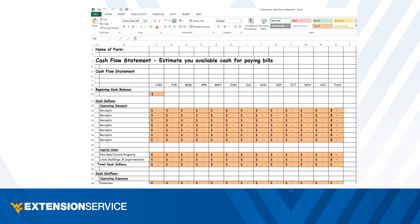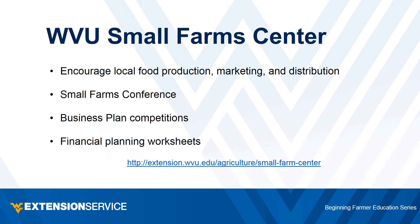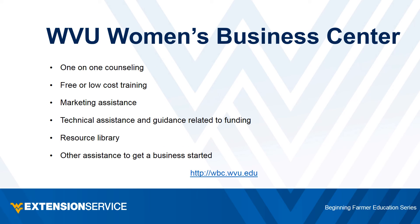Here is one example of a WVU Extension computer spreadsheet that is available — a cash flow statement in Excel. WVU Women's Business Center offers one-on-one counseling, free or low-cost training, marketing assistance, technical assistance and guidance relating to funding, a resource library, and other assistance to help get a business started.